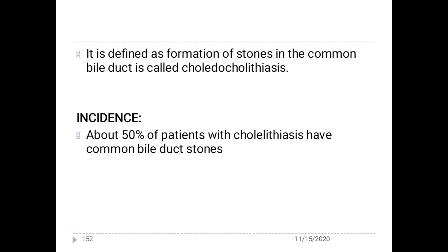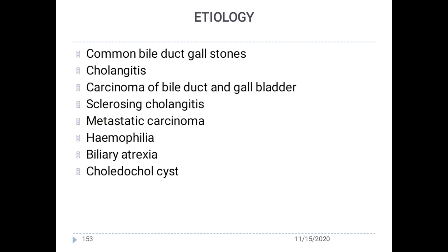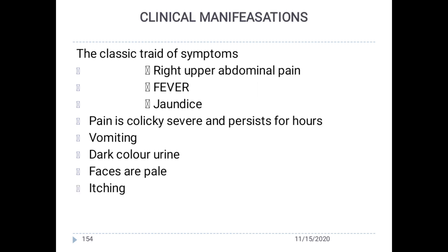Formation of stone in the common bile duct is called choledocholithiasis. In 50% of patients it is associated with the same common bile duct gallstone. Other causes include cholangitis, carcinoma of the bile duct and gallbladder, sclerosing cholangitis, metastatic carcinoma, hemophilia, biliary atresia, and choledochal cyst. Manifestations include right upper abdominal pain, fever, jaundice, colicky pain persisting for hours, vomiting, dark-colored urine, and pale feces with itching.